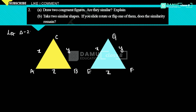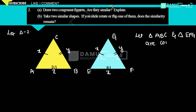That means these sides are equal: AB equals EF, which equals z cm. AC equals EZ, which equals x cm.